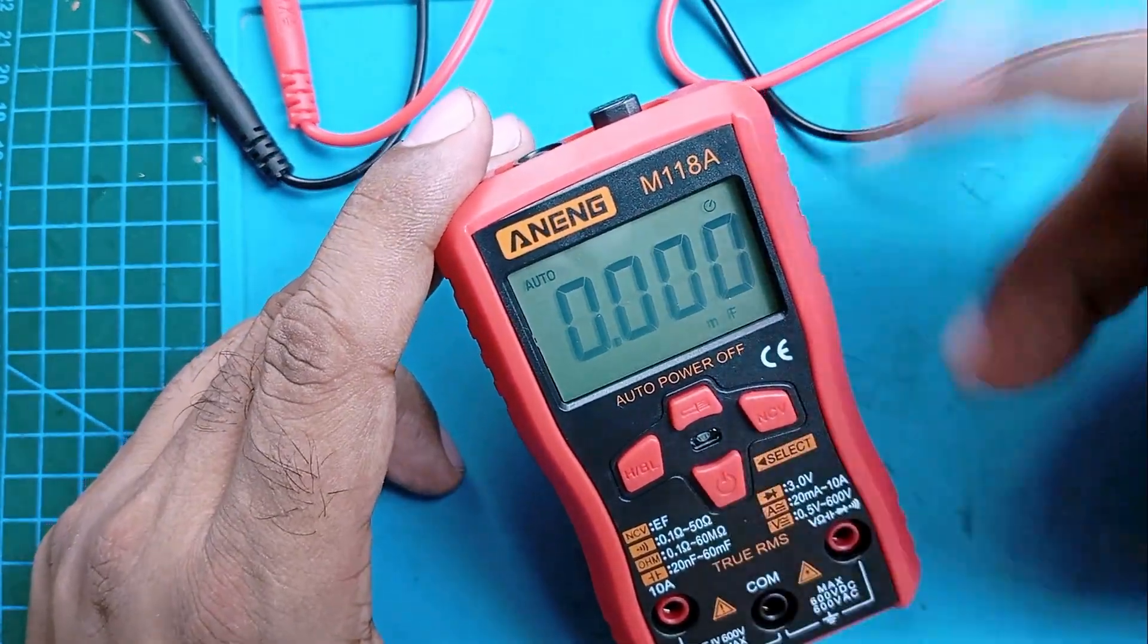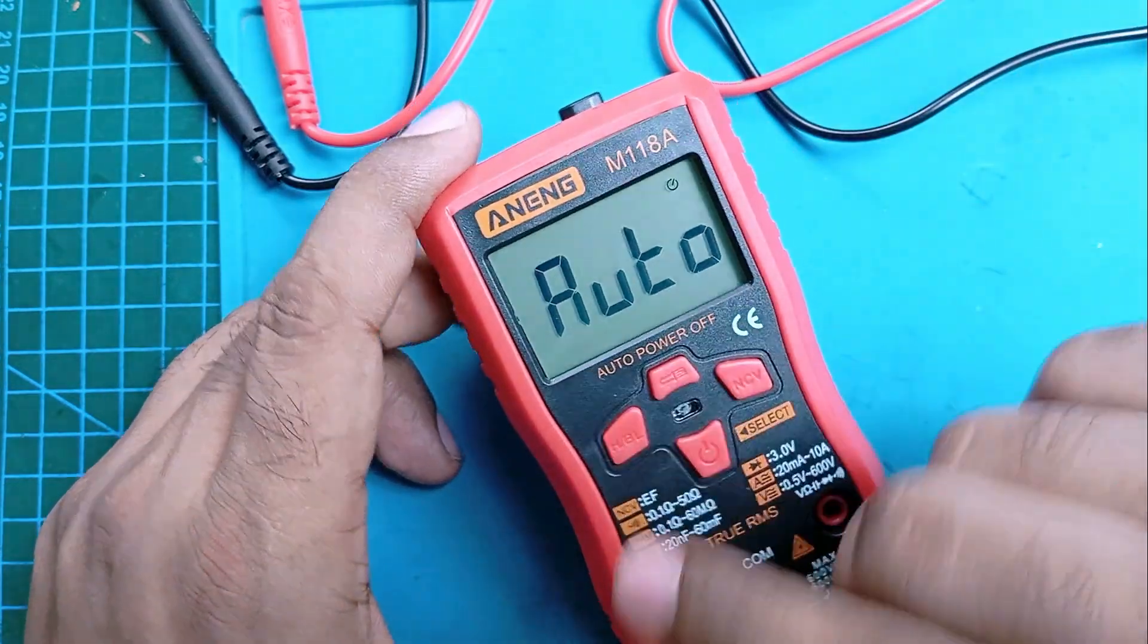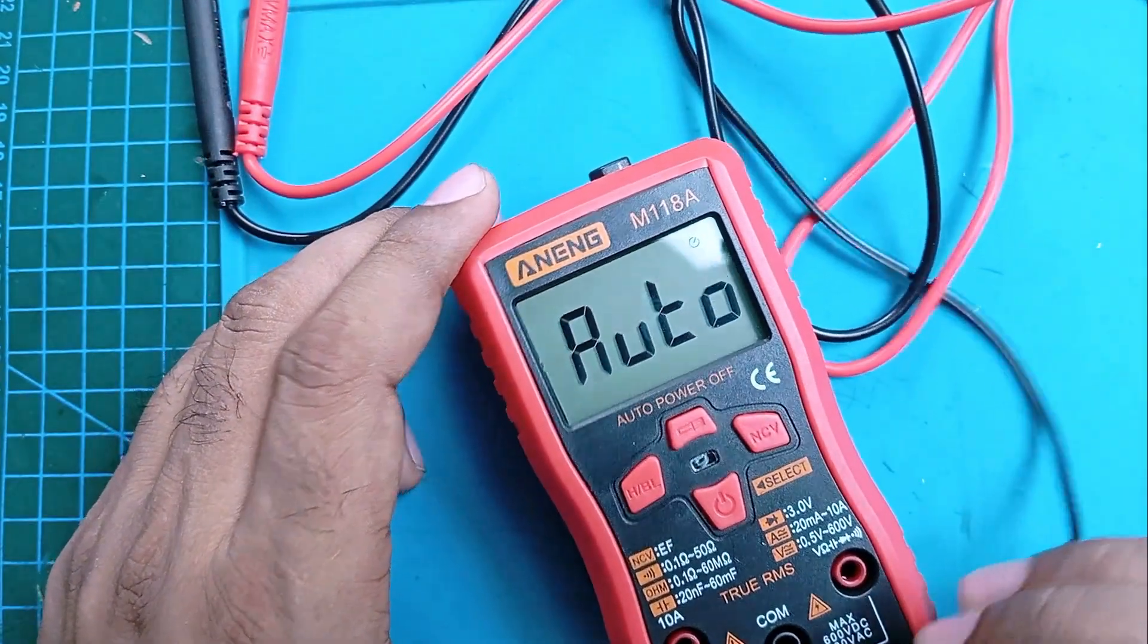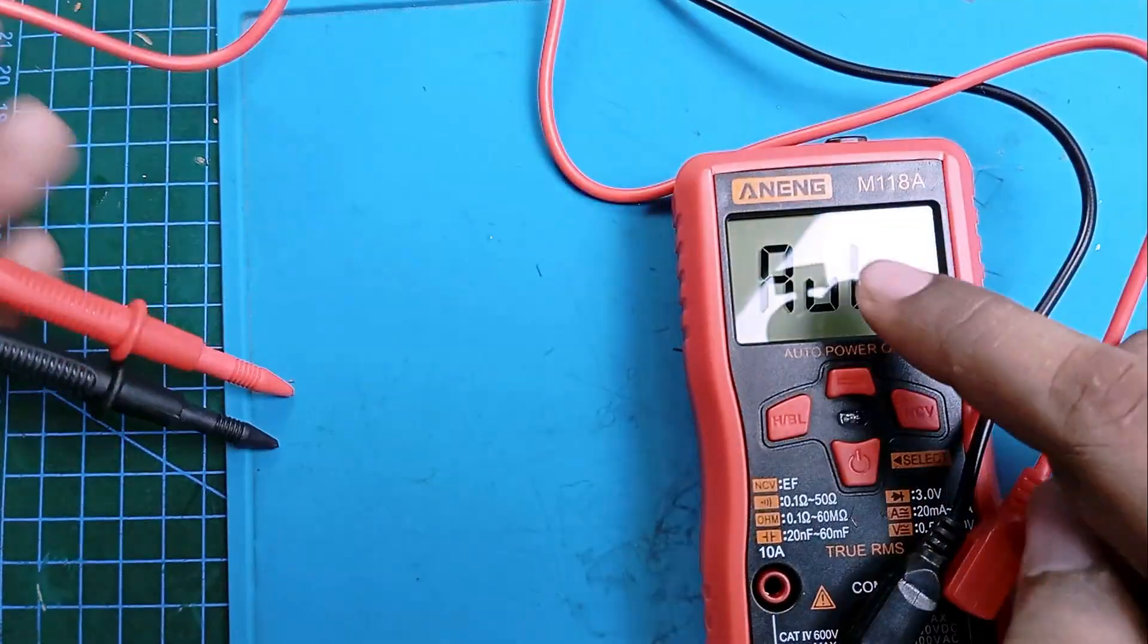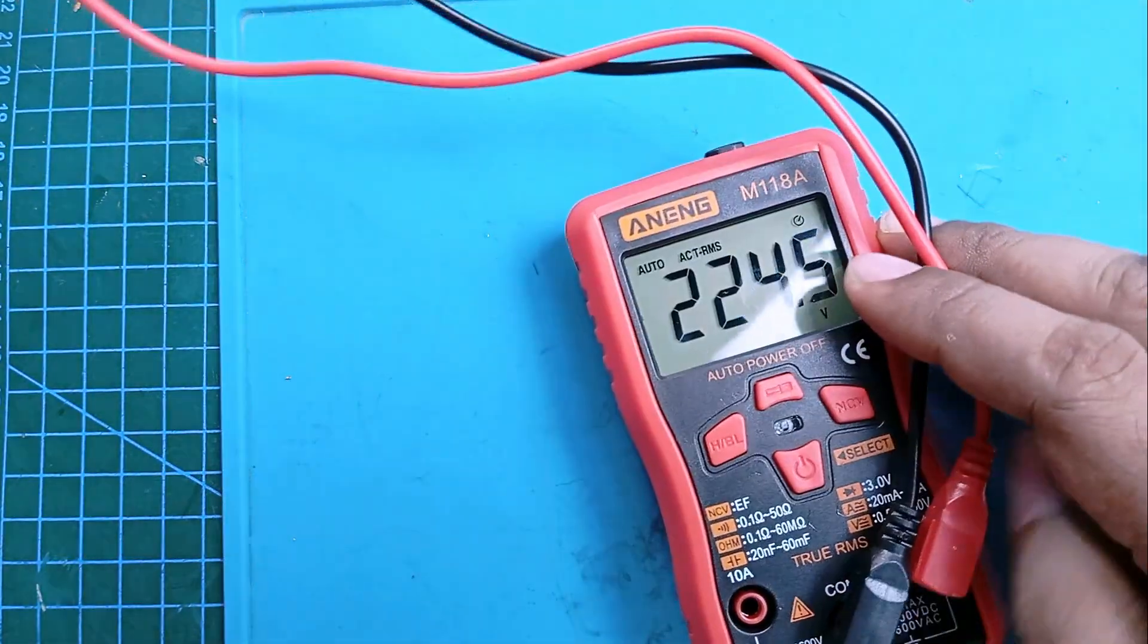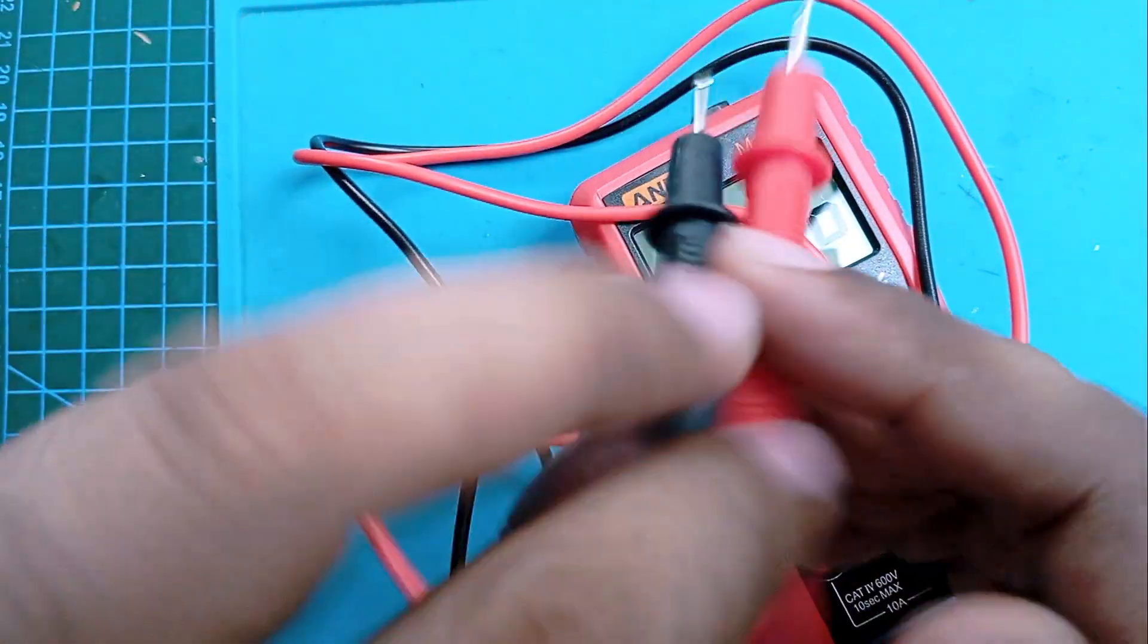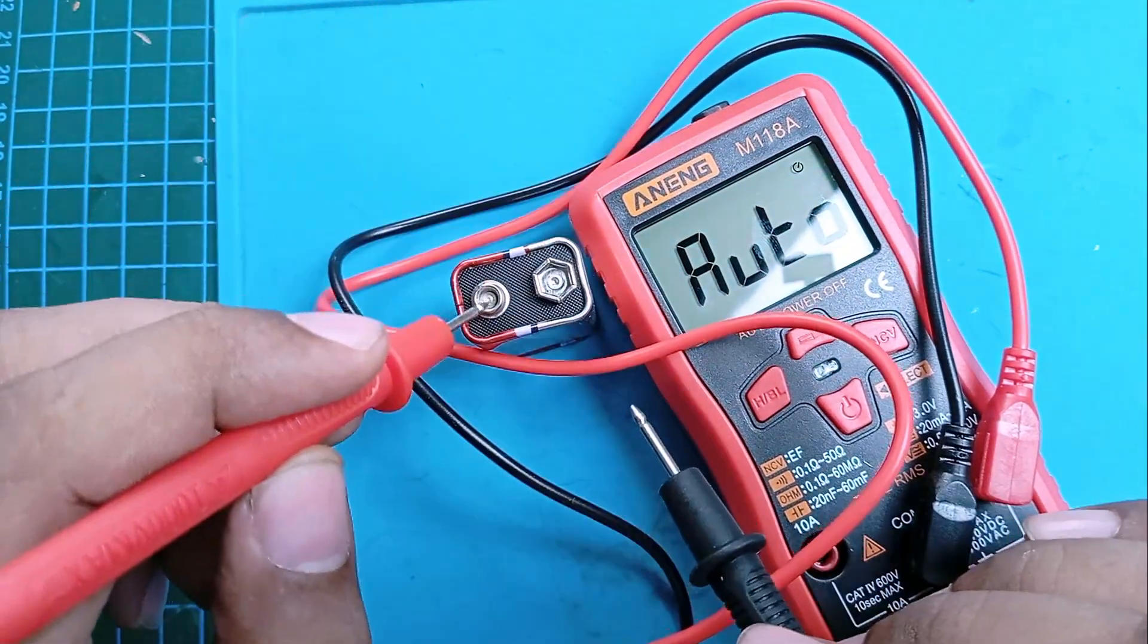Then it has auto mode, and in this mode you can do anything. After pressing the button, it's in auto mode and I can check the AC voltage. You see 225 volts AC right now, and I don't press anything.